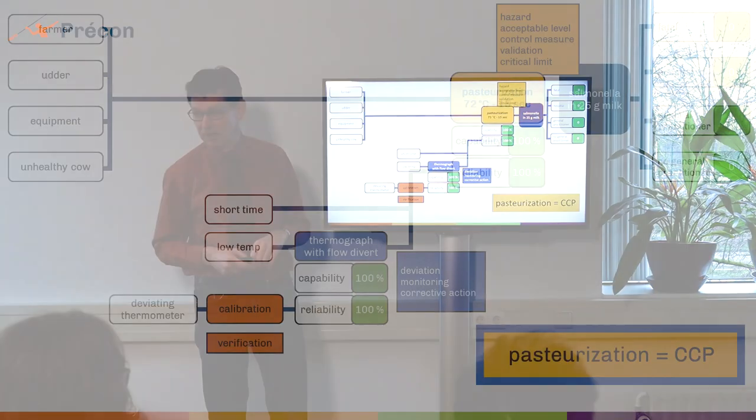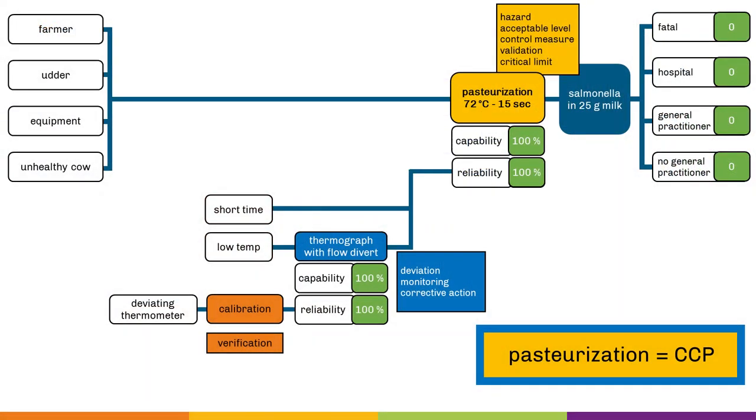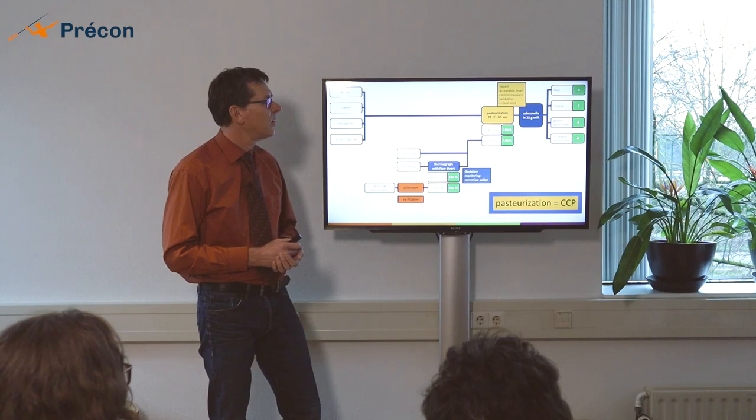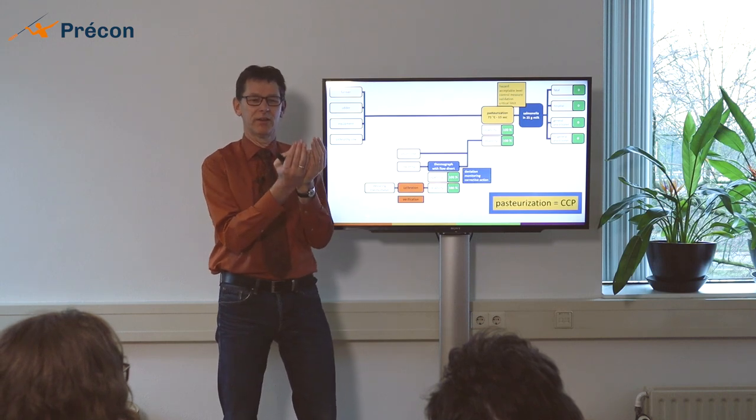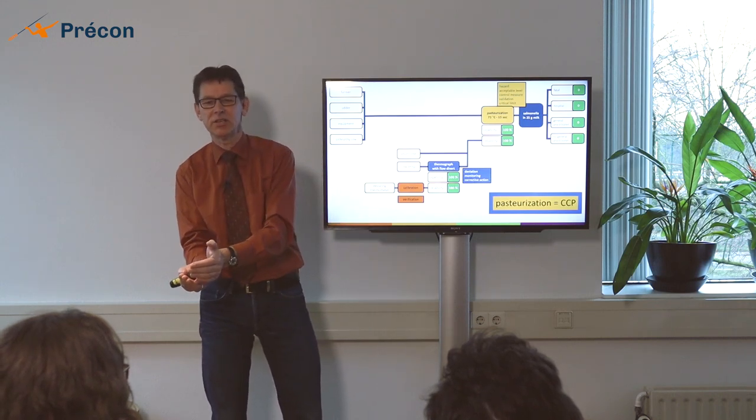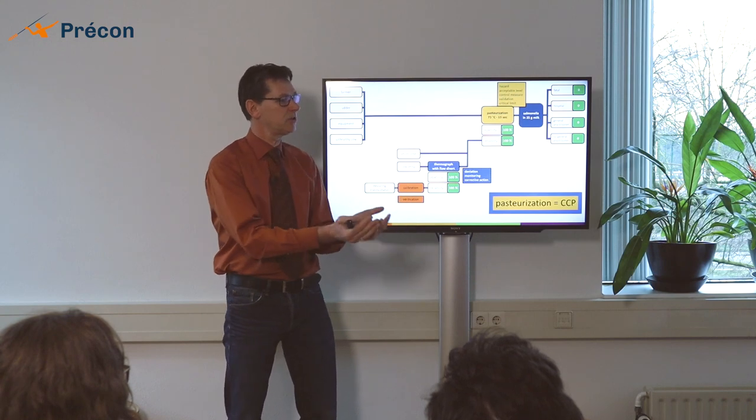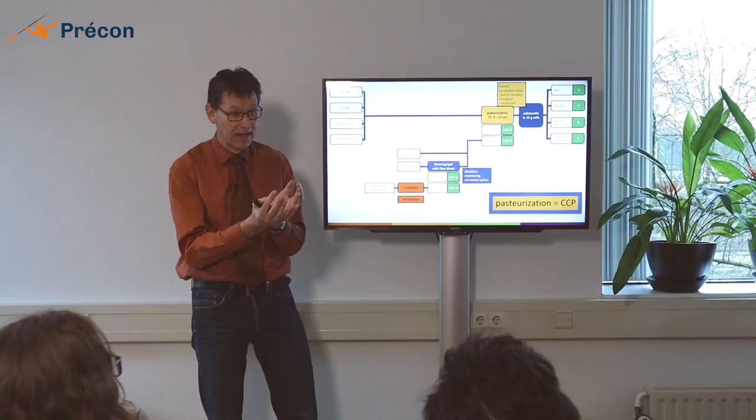And number ten is the definition of a CCP. In this case, pasteurization is a CCP. But it can only be a CCP when we can apply monitoring and corrective actions. So, to understand a CCP, you need to understand ten definitions. It's two hands full of definitions that you need to understand. And next to that, you need to understand likelihood and severity of hazards and likelihood and severity of deviations. So there's a lot of concepts, a lot of different things that you need to deal with in a hazard analysis within HACCP.